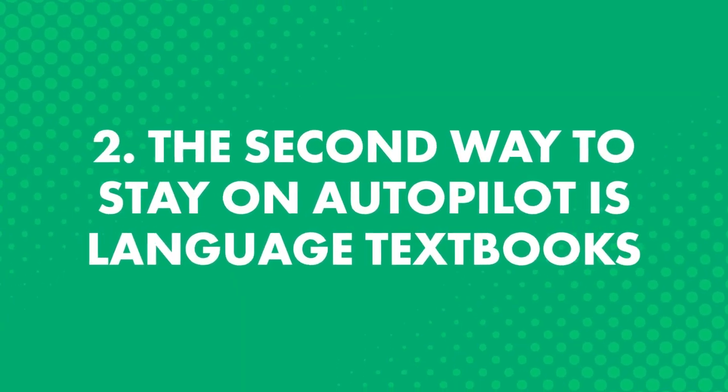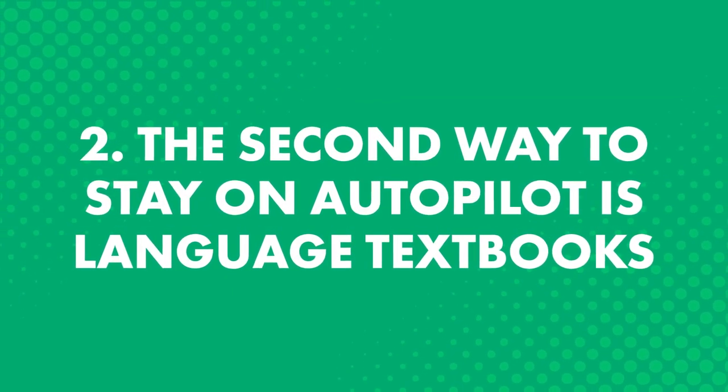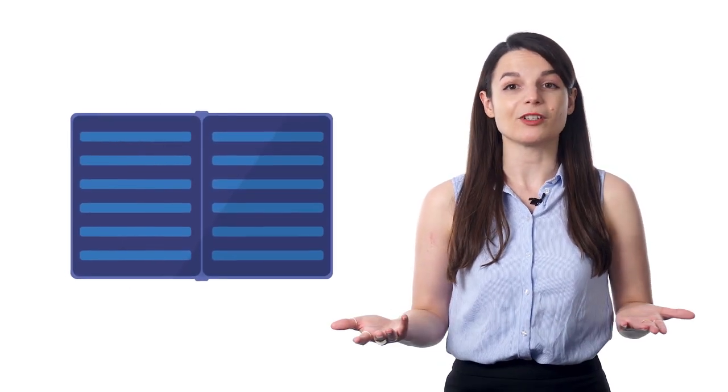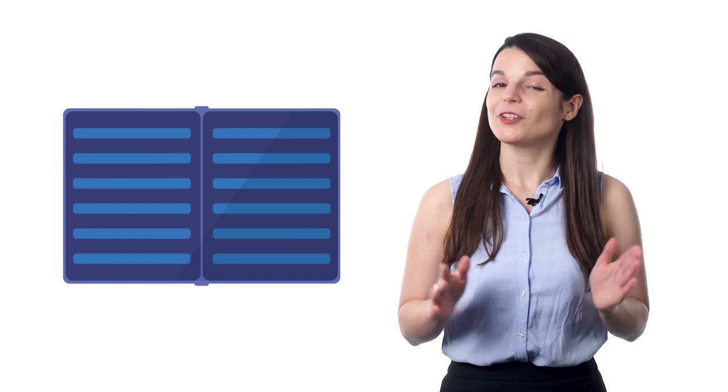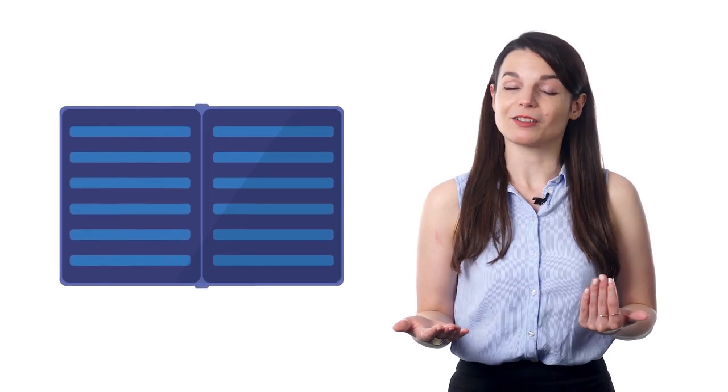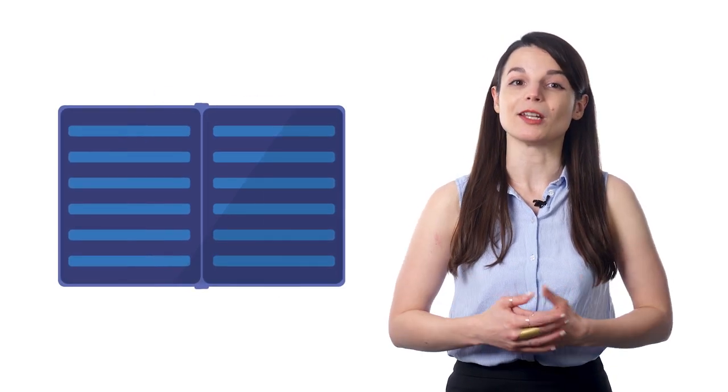The second way to stay on autopilot is with language textbooks. This is basically just because books are sequential. You just follow the pages from one until the end. You don't have to think about where to go next, so it's easy to stay on track with what you need to do.